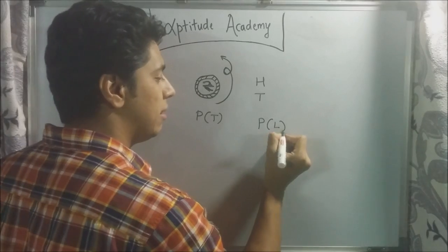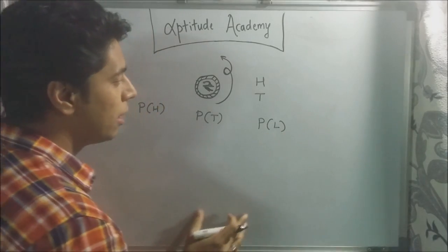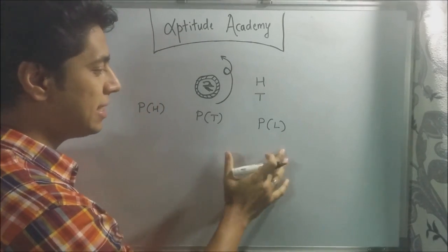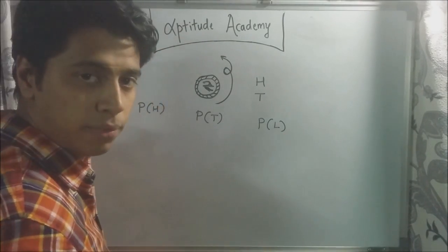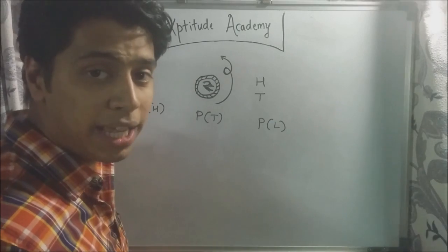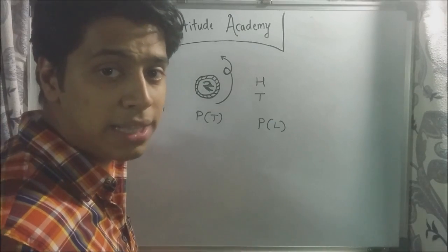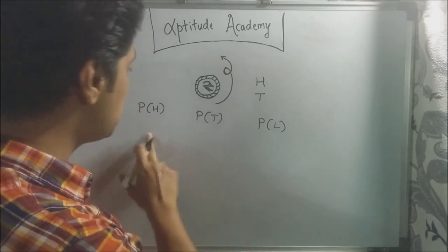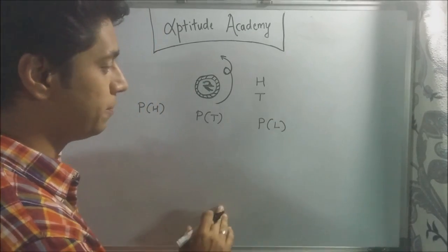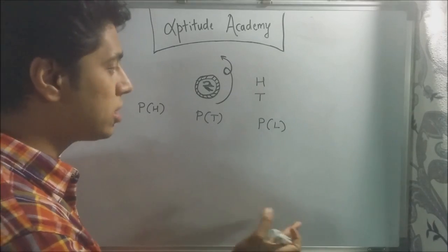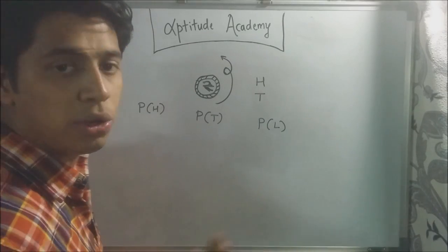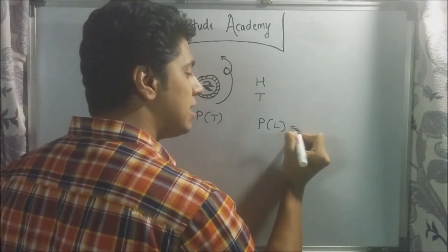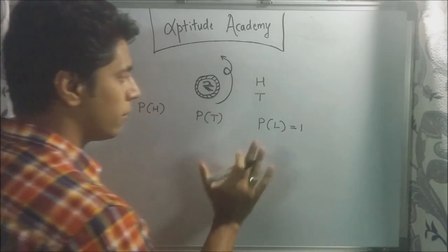P of L — Landing. Now, which of these probabilities is equal to one? Probability being equal to one means the event always occurs. Which one is always one? P of L, because once I toss the coin, it's definitely going to land. So P of L is equal to one.